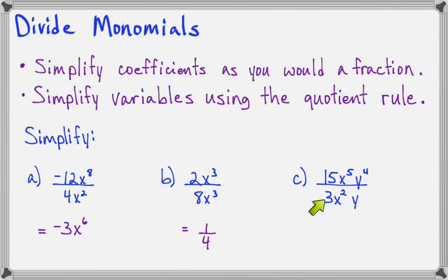On this example, 15 divided by 3 will be 5, x to the 5th divided by x to the 2nd will be x to the 3rd, and y to the 4th divided by y will be y to the 3rd.